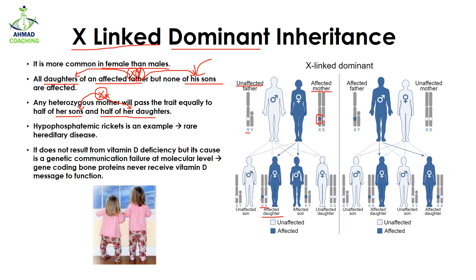Half of the X chromosome is transferred to the son, since this X is coming from the female, so this son is also affected. The other X, which has no change, is transferred to the unaffected daughter as well as to the unaffected son.